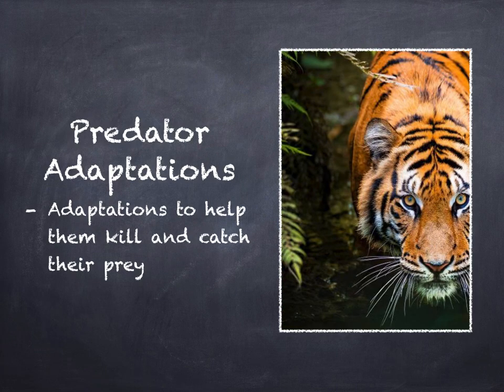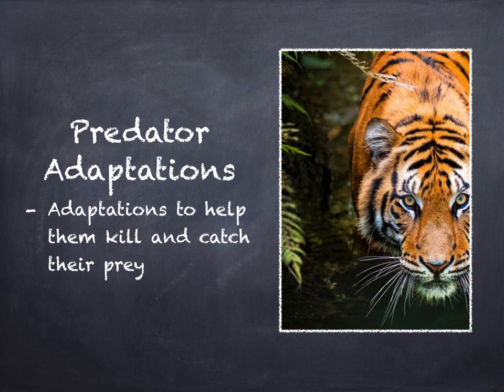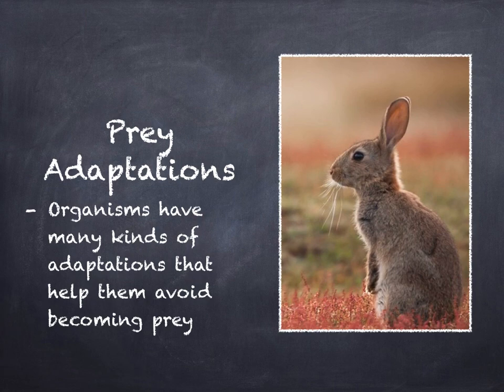Predators have adaptations that help them catch and kill their prey. A cheetah can run very fast for a short time, enabling it to catch its prey. Some predators, such as owls and bats, have adaptations that enable them to hunt at night, when their prey — small mammals and insects — are active. Prey adaptations: The smelly spray of a skunk and the sharp quills of a porcupine help keep predators at a distance. Organisms have many kinds of adaptations that help them avoid becoming prey.